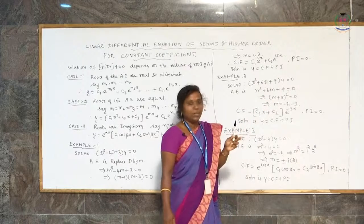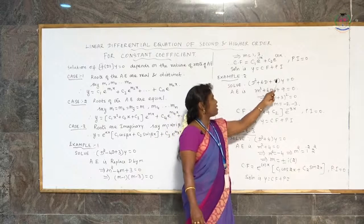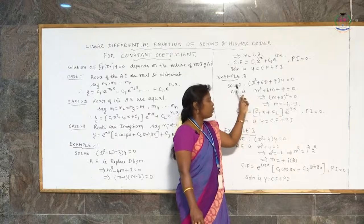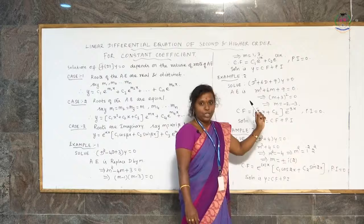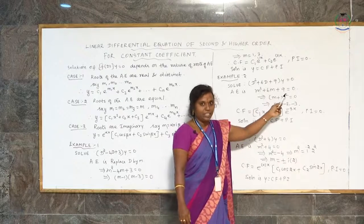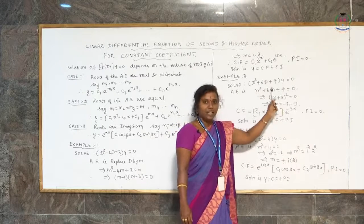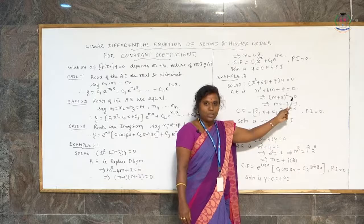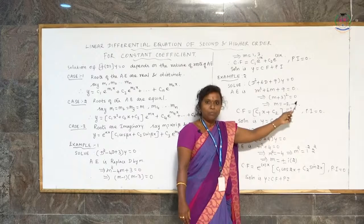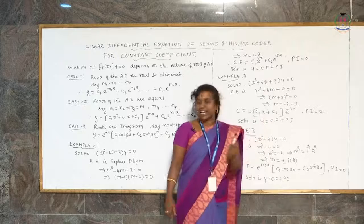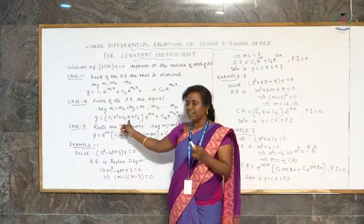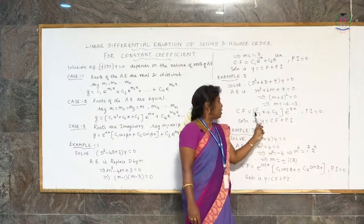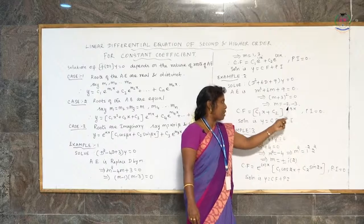Example 2: solve (D² plus 6D plus 9)y equals 0. To find the auxiliary equation, replace D by m and equate to 0: m² plus 6m plus 9 equals 0. This is of the form (a plus b)², so it factors as (m plus 3)² equals 0. Therefore the roots are minus 3 and minus 3 — they are equal. This falls under Case 2. Since only two roots are equal, we write: complementary function equals (c₁x plus c₂)e^(minus 3x).